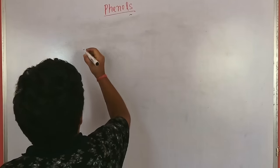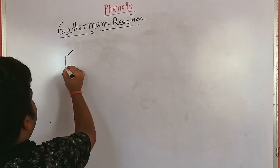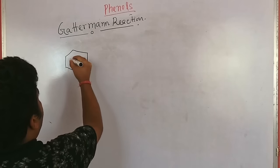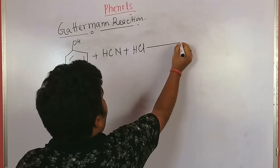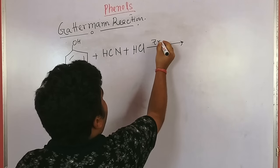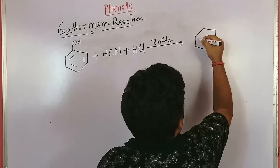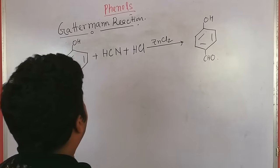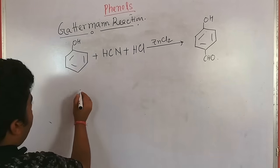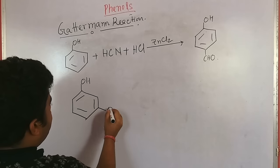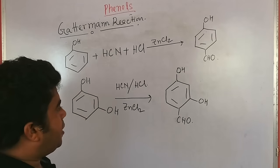Next is the Gattermann reaction. In this reaction, phenol is reacted with hydrogen cyanide and HCl in the presence of anhydrous zinc chloride, giving parahydroxybenzaldehyde. If resorcinol is used, it gives dihydroxybenzaldehyde.